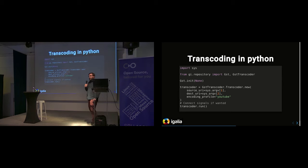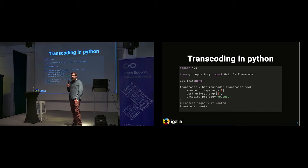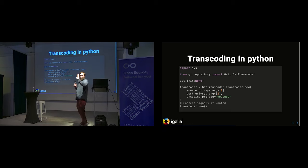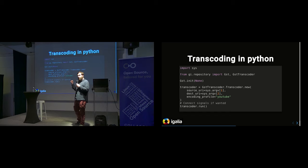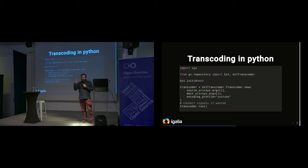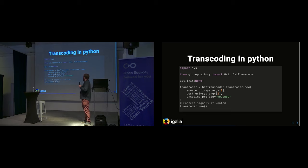Let's make a simple transcoding job in Python. This transcoding program takes two arguments: the source URI and the destination URI, with the encoding profile. In that case I just provide a well-known encoding target — for example one for YouTube, which will follow the exact spec that YouTube requires for files you upload to them. Then you just run it and it does the transcoding. So in three lines of code you have a transcoding job.